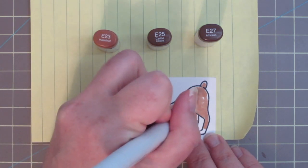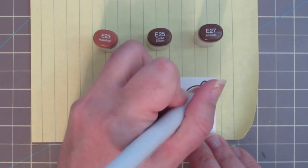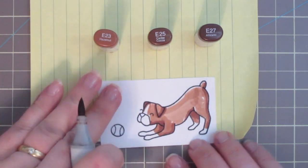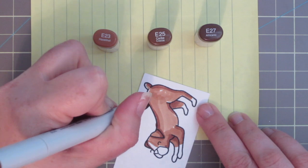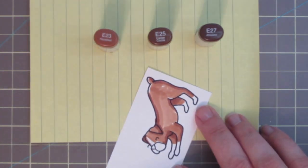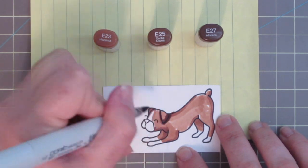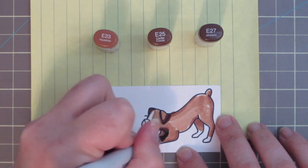So now I'm going to take my E25 and just lay in my shadowed areas, just kind of figuring out where I want those to go, kind of doing along the back side of his legs and around his ears and a little bit up from his neck to the back of his body, kind of leaving some highlighted areas right there on the top of his rump since that's where the sun would hit the strongest.